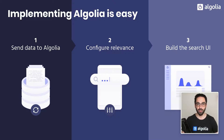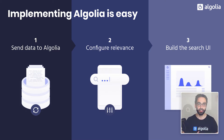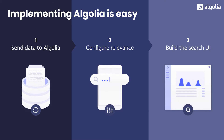To implement Algolia, you have to go through three main steps. Step one is to take your data and send it to Algolia — this is important so that Algolia is able to return results super fast. Step two is to configure your relevance; there are many settings available to fine-tune relevance, but with just two, you can get really good results. Step three is to build the search UI — the interface where users will type their query and see the results. There is the InstantSearch library to help you with that.